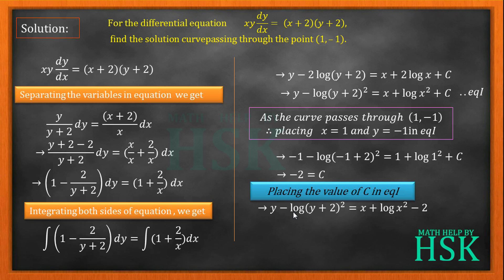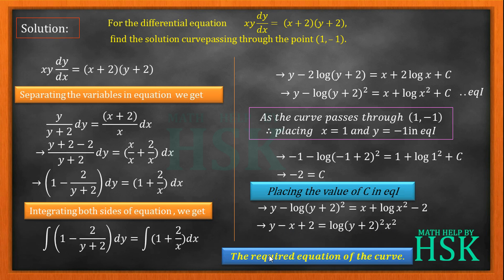Placing c = -2 back into Equation 1, I get y - log(y+2)² = log(x²) - 2. Rearranging, this becomes y - x + 2 = log[(y+2)²·x²], which is the required equation of the solution curve. This is the particular solution curve passing through the point (1, -1).